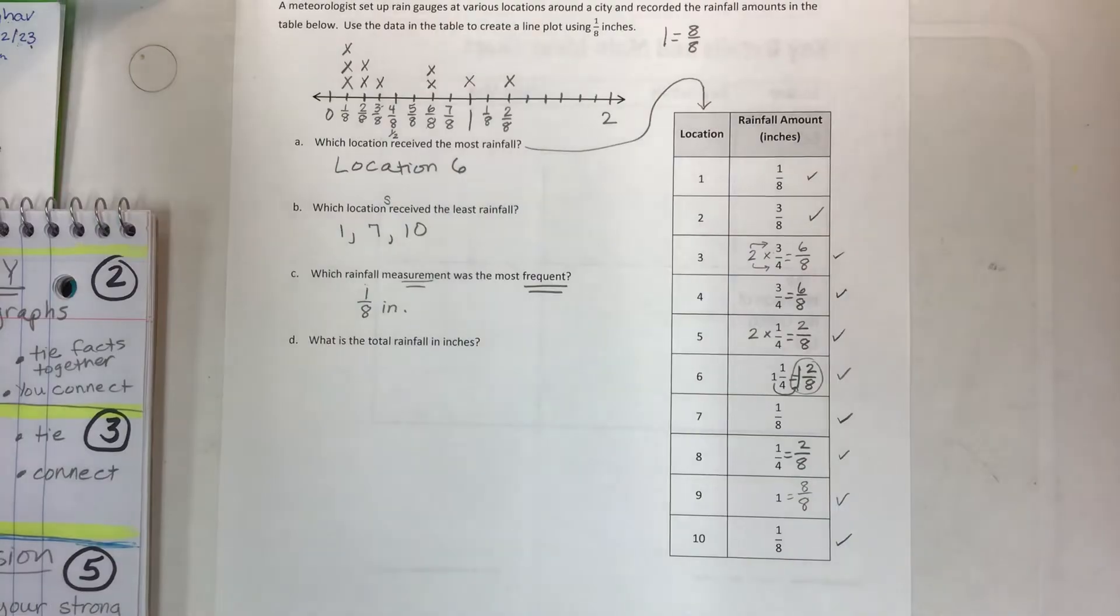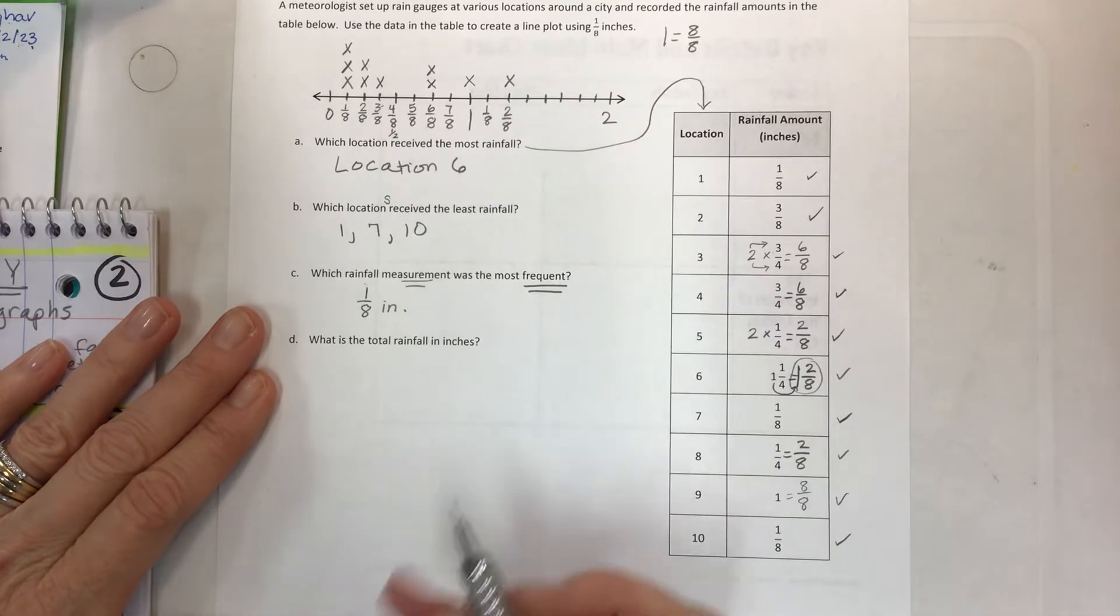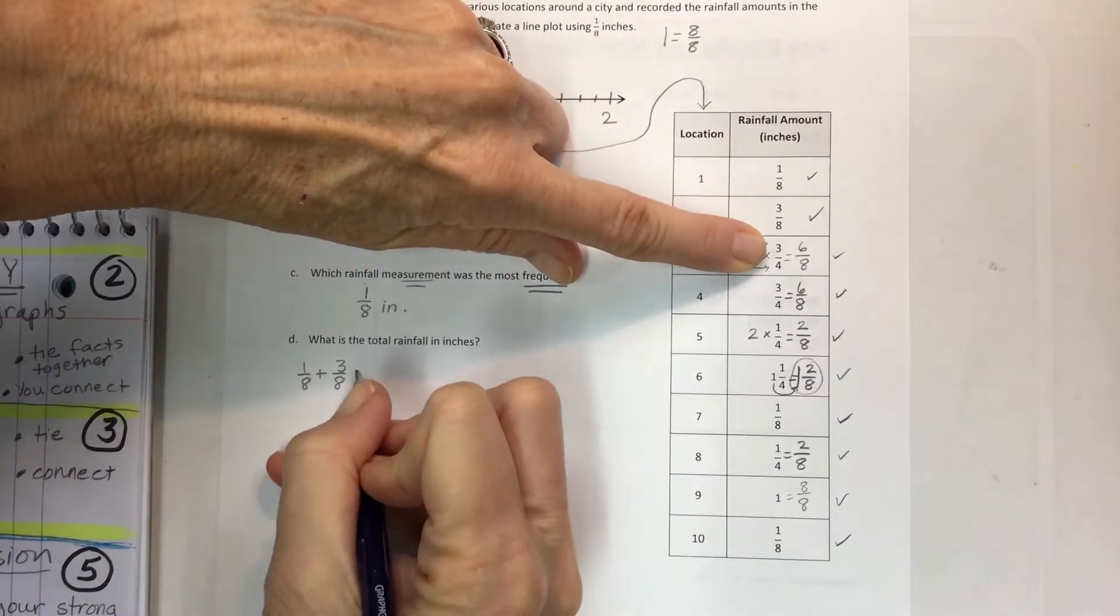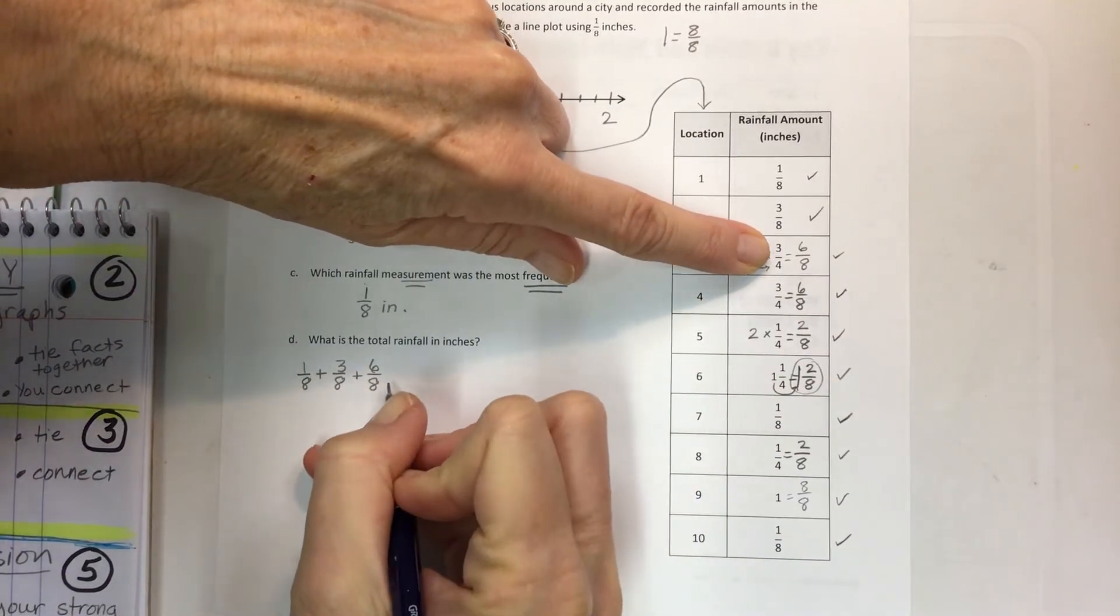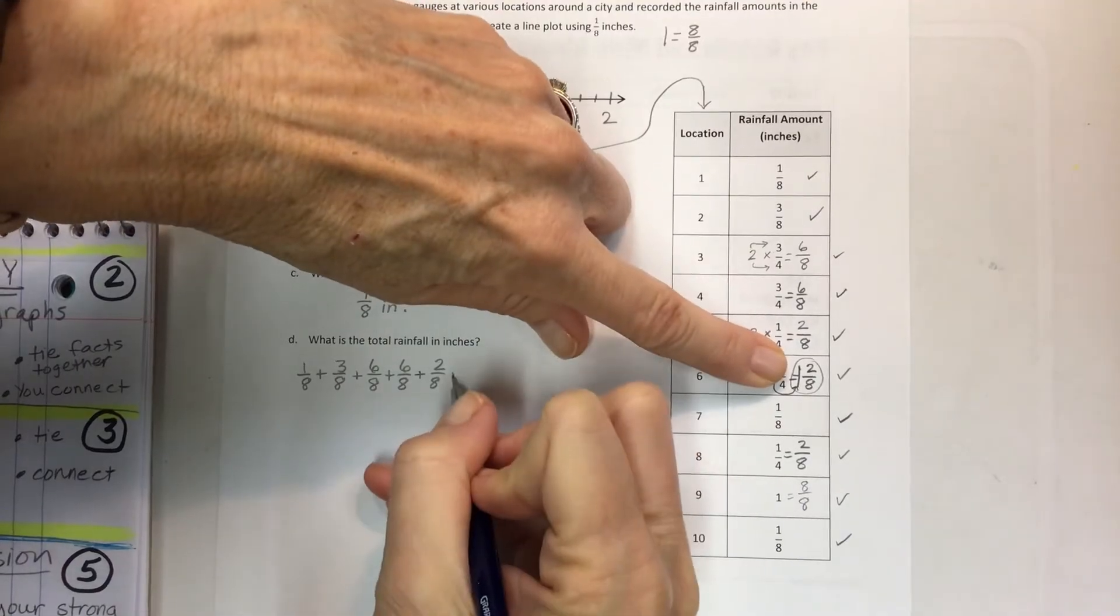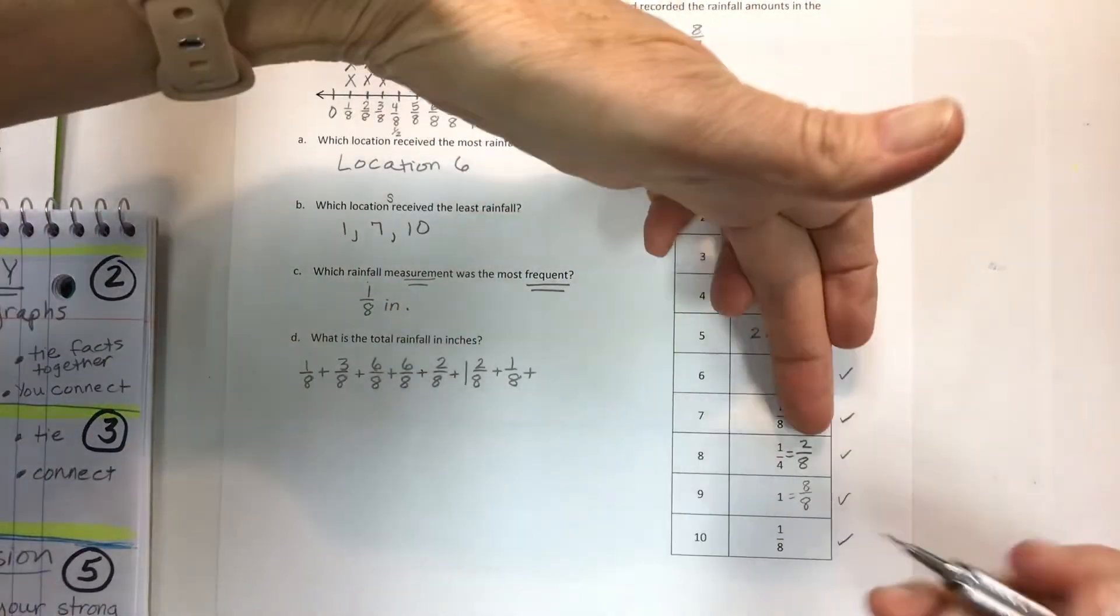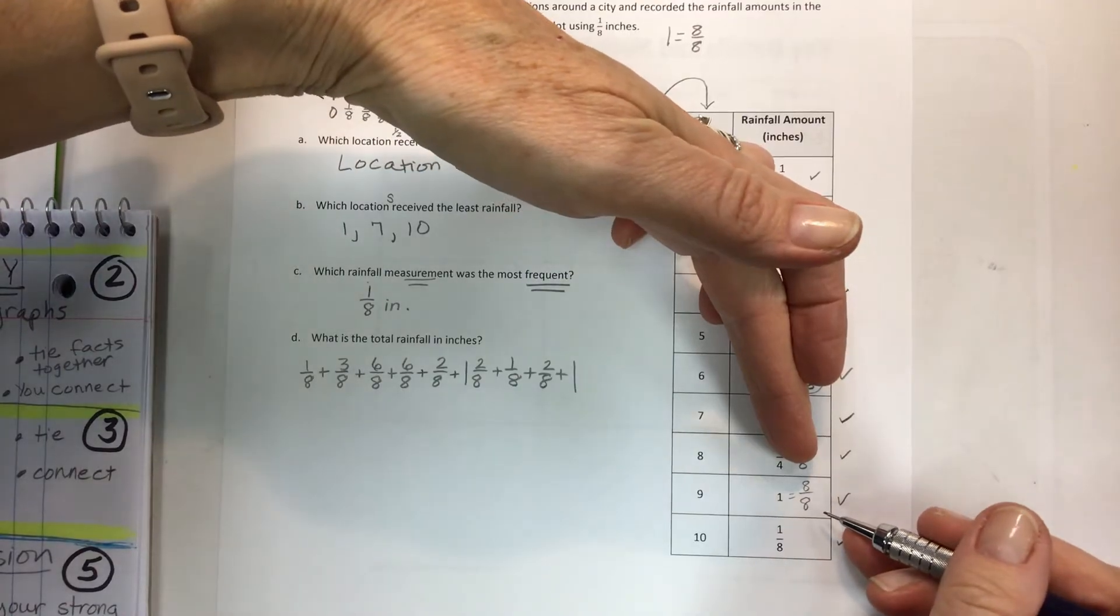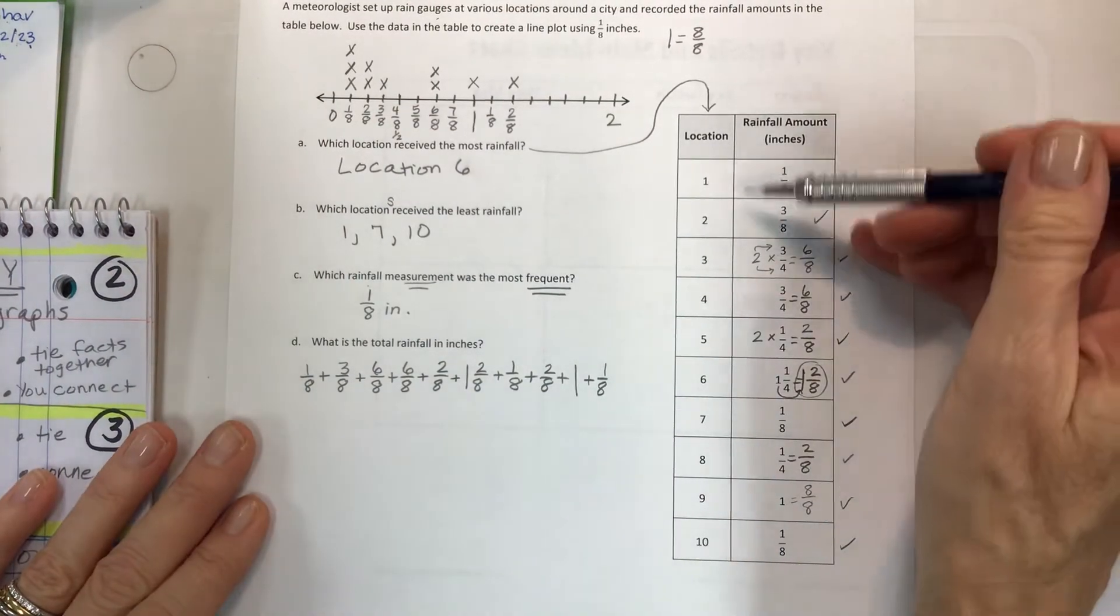Now for D, what is the total rainfall in inches? That's right, you get to add these all up. So often on tests they will say write an expression to show what you're doing. So you should write every single thing down from each location. And what I would do is since you have already hopefully found a common denominator, I would use the common denominator or the equivalent fractions for the ones that had something different than eight to start. And then for the whole numbers, I would just use that.